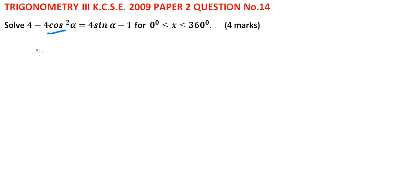That is in the form of sin. We know that cos squared alpha is equal to 1 minus sin squared alpha and therefore we change this.